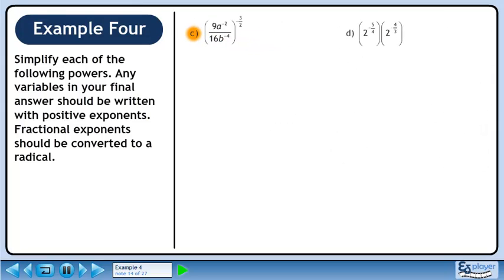Now we'll move on to part c. Within the brackets, write the powers so they have positive exponents. Now flip the fraction and change the sign of the exponent. Raise everything to the power of 3 over 2.